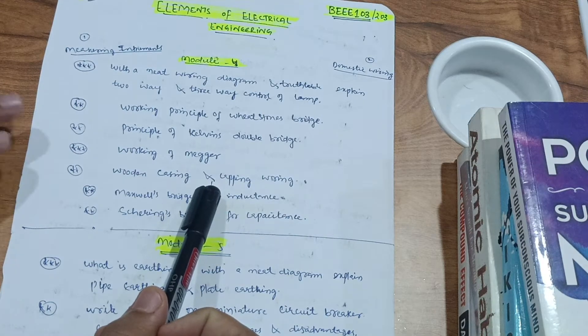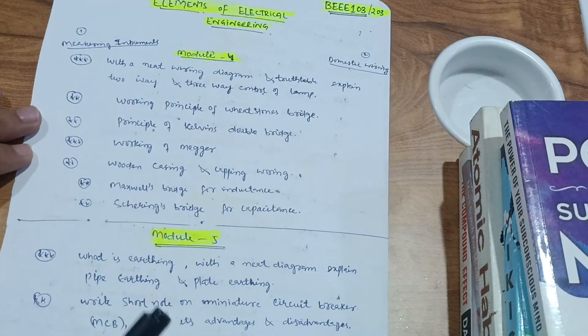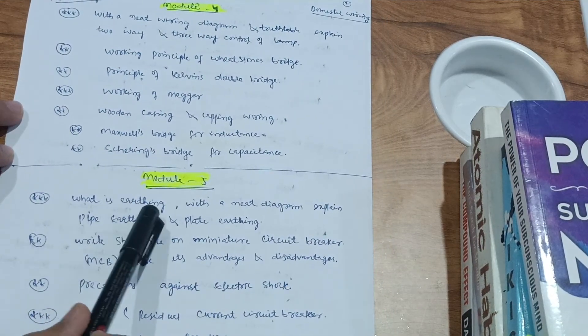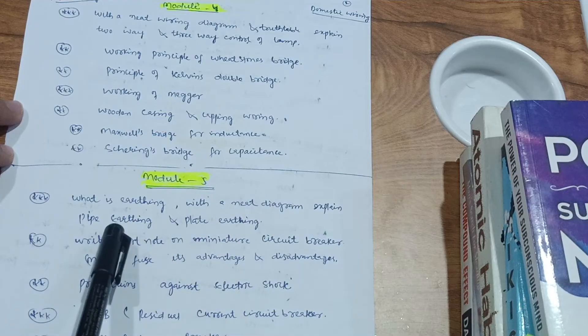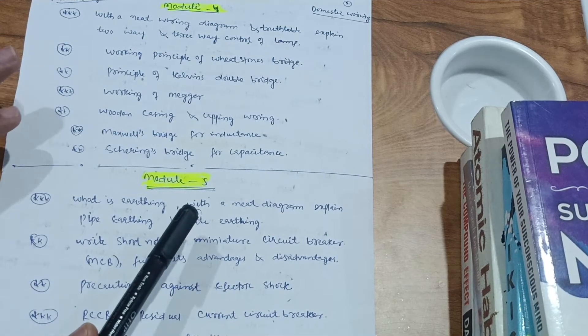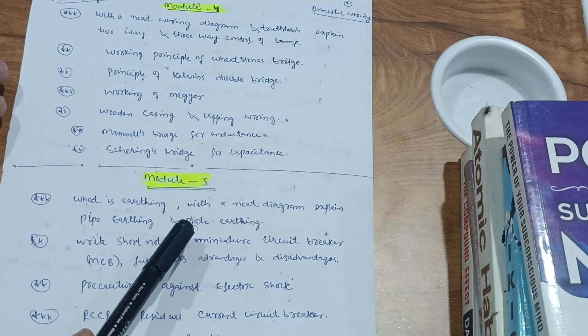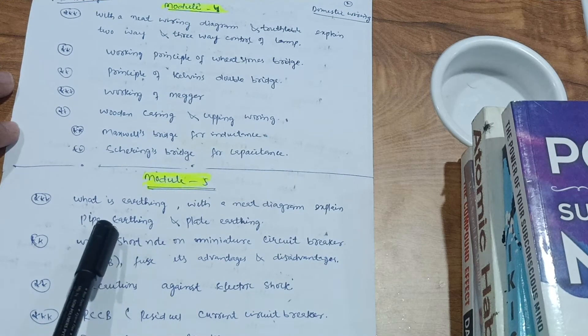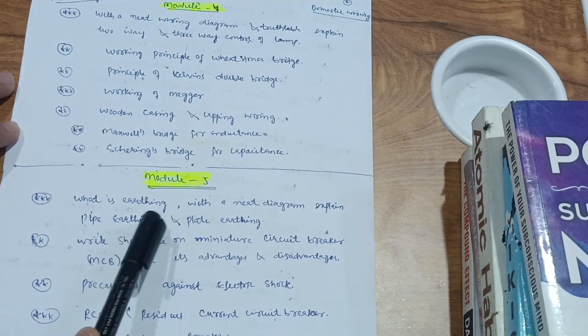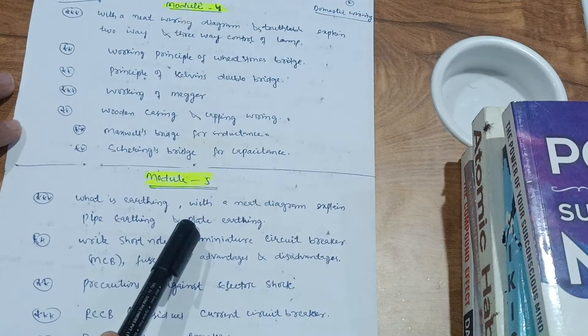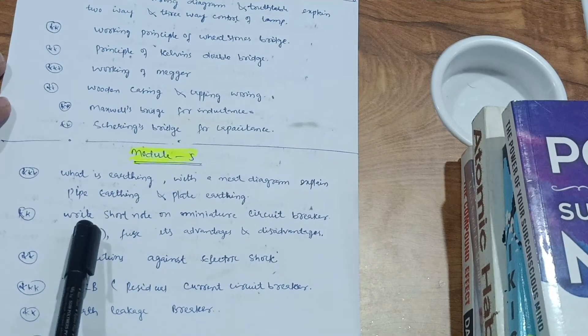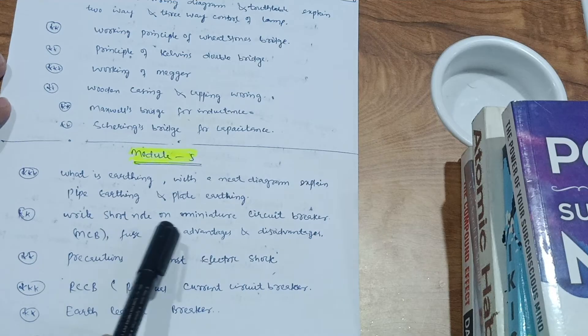Next one is Module 5 in which you have to cover what is earthing. With the neat diagram explain pipe earthing and plate earthing. As far as 18 scheme is concerned, these two questions were definitely there. One among them they will ask, like with the neat diagram explain pipe earthing, sometimes they will give you plate earthing.